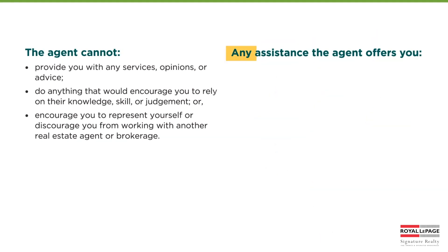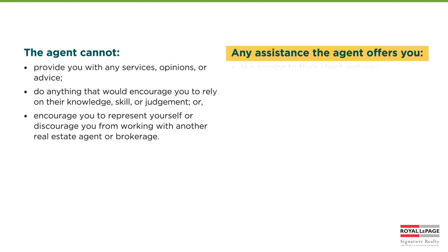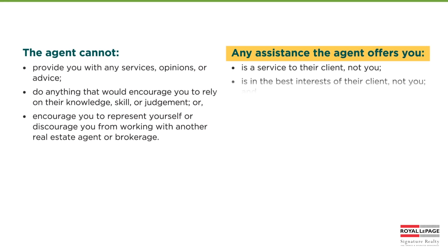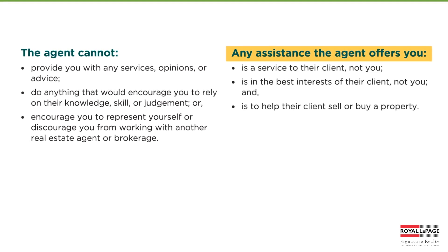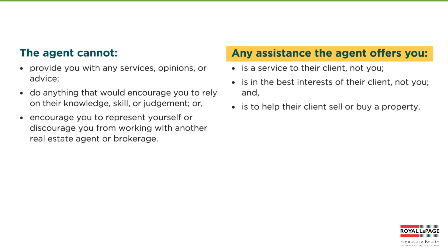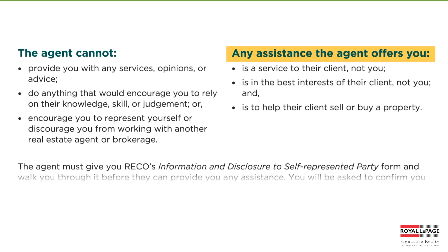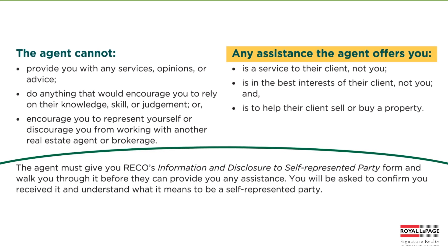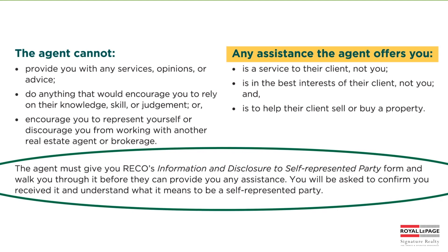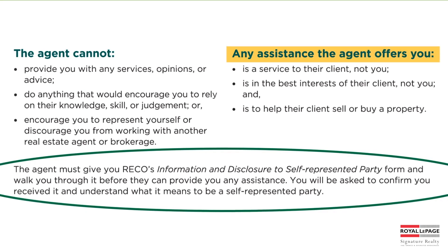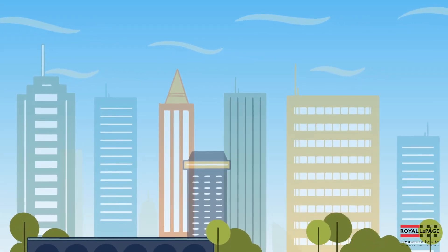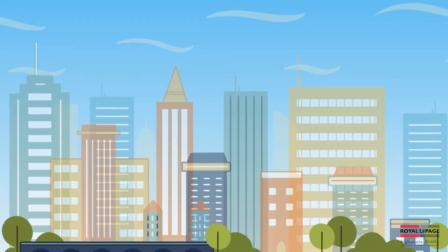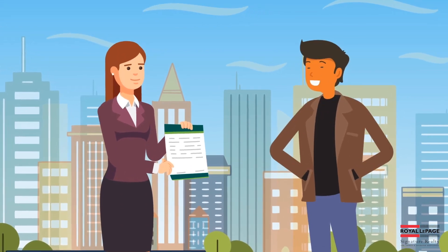Remember, any assistance the agent offers you is a service to their client, not you. This assistance is in the best interests of their client, not you. They are there to help their client sell or buy a property. The agent must provide you with RECO's information and disclosure to self-represented party form and walk you through it before they can provide you any assistance. And remember, you always have the right to change your mind and get advice as a client of another brokerage.